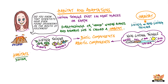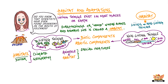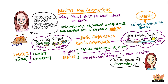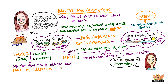Habitats differ by the kind of climate and geography that they have. Animals that make a habitat their home develop special features, or adapt, to survive and feel comfortable in their habitat. This is known as adaptation. The two main types of habitat are land or terrestrial habitat, and water or aquatic habitat.